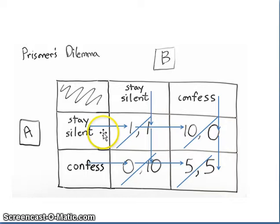For this first box, if prisoner A stays silent and prisoner B stays silent, then you have a one-year sentencing for each. For this one down here, if prisoner A confesses and prisoner B stays silent, prisoner A will end up with not going to jail at all, and prisoner B will end up with going to jail for 10 years.